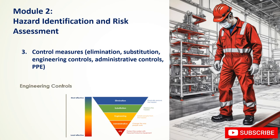Engineering controls isolate people from hazards by modifying the workplace or equipment. Examples include ventilation systems to remove contaminants, enclosures around machinery, noise reduction equipment, and ergonomic workstation design. Administrative controls change the way work is organized, including job rotation to reduce repetitive tasks, work schedules to limit exposure, training and education, safe work procedures, and regular maintenance of equipment.